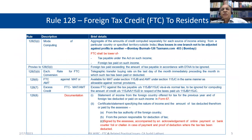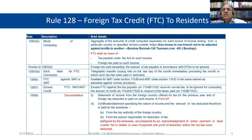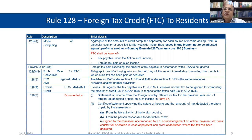The FTC amount is to be computed separately for each source of income and for each country. A Bombay High Court decision in Bombay Burma held that losses of one branch cannot be adjusted against profits of another branch for computing FTC. The FTC shall be the lower of tax payable under the Act or the foreign tax paid on such income. Foreign tax paid exceeding the amount of tax payable in accordance with the treaty is to be ignored — credit is limited to treaty rates.